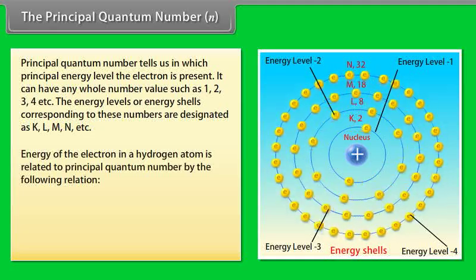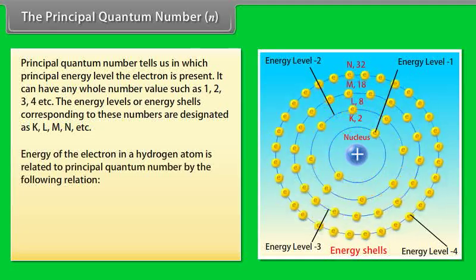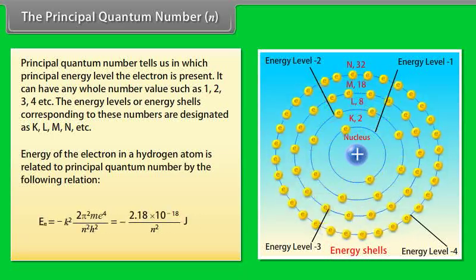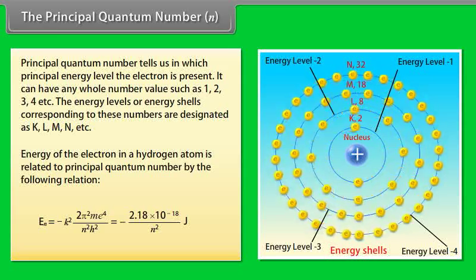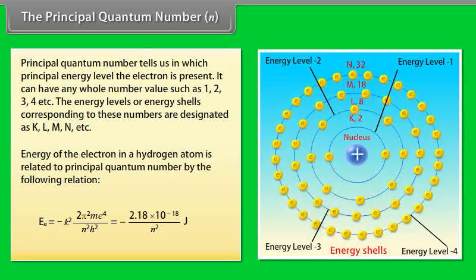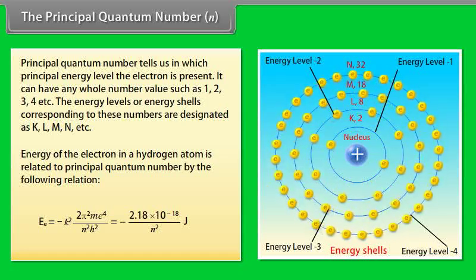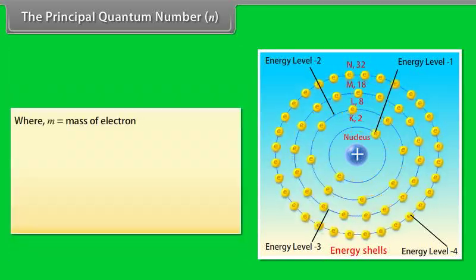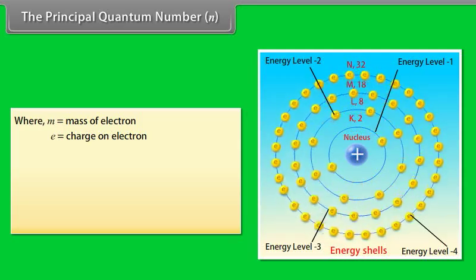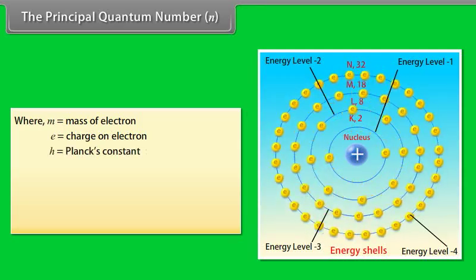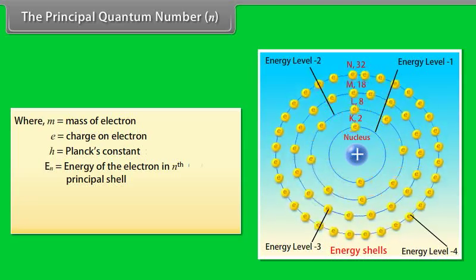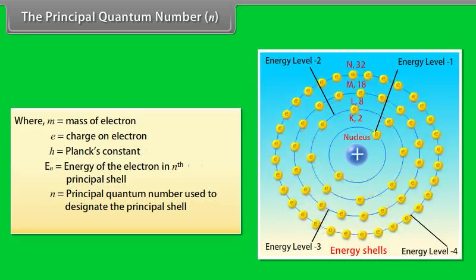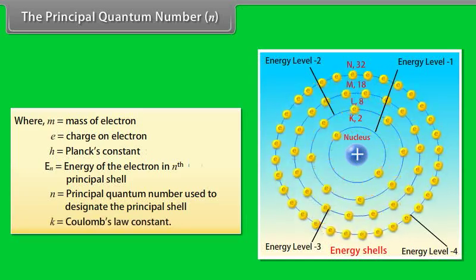The energy of the electron in a hydrogen atom is related to the principal quantum number by a specific relation, where M is the mass of the electron, E is the charge on the electron, H is Planck's constant, En is the energy of the electron in the nth principal shell, N is the principal quantum number, and K is the Coulomb's law constant.